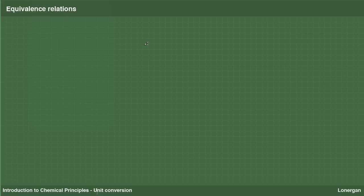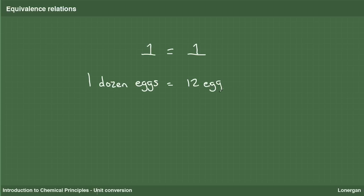Some examples of equivalence relations are the equality of 1 with itself, the fact that one dozen eggs is 12 eggs, or in comparing the masses of objects, the relation that 1 kilogram is 2.2 pounds. Note that here we take the 1 as exact and that the number of pounds in a kilogram is rounded to two significant figures, namely 2.2.